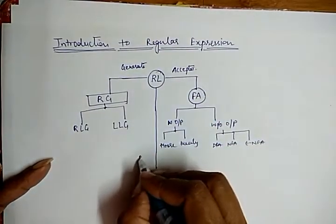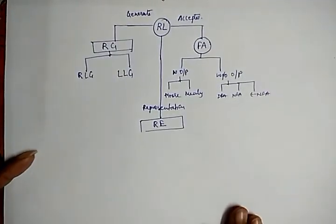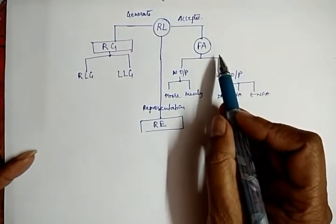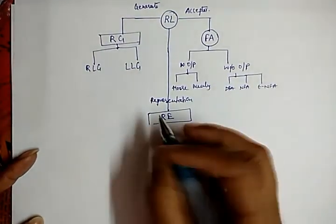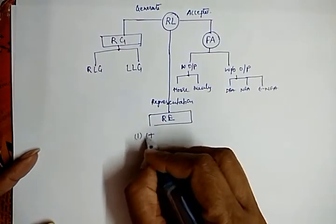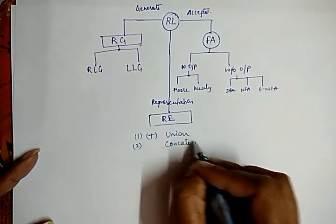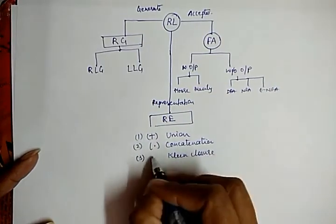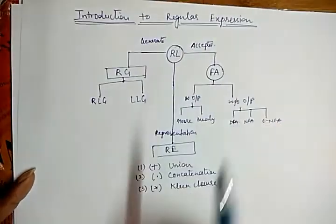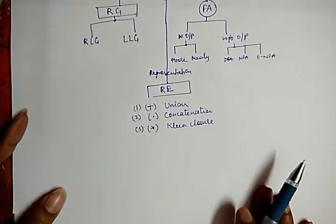The third category is representation: the regular language can be represented by a regular expression (RE). Any language accepted by a finite automata can be represented using a regular expression. Regular expressions have three operations: union (represented by the plus sign), concatenation (represented by the dot sign), and Kleene closure (represented by the asterisk sign).